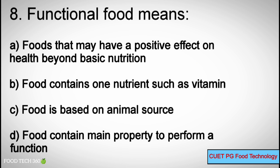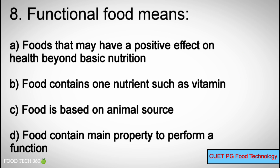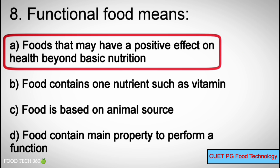Q8: Functional food means — A. Foods that may have a positive effect on health beyond basic nutrition, B. Food that contains one nutrient such as vitamin, C. Food based on animal source, D. Food containing a main property to perform a function. Correct answer: A. Foods that may have a positive effect on health beyond basic nutrition.